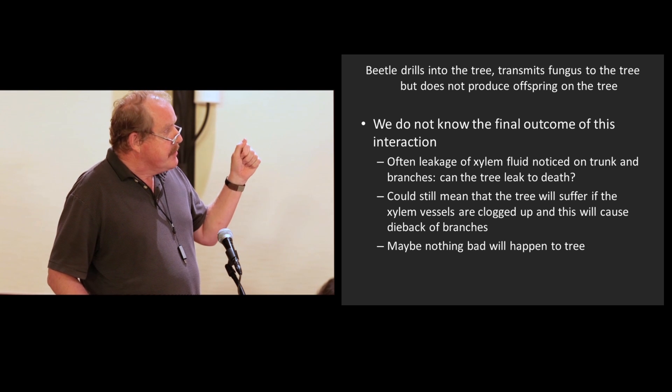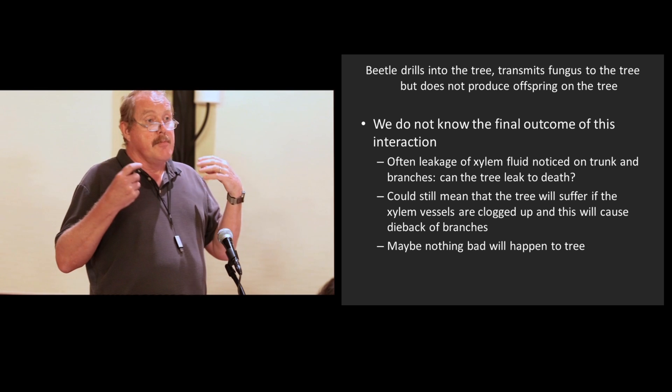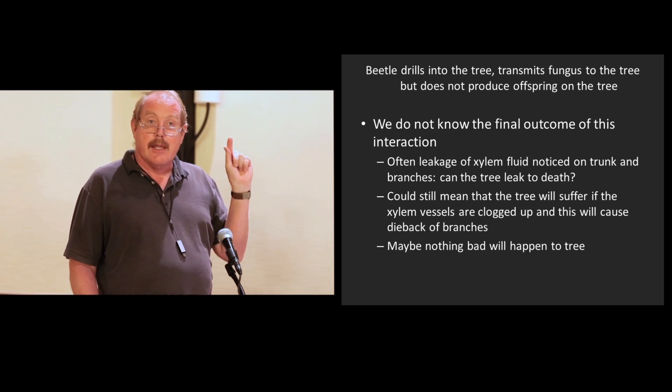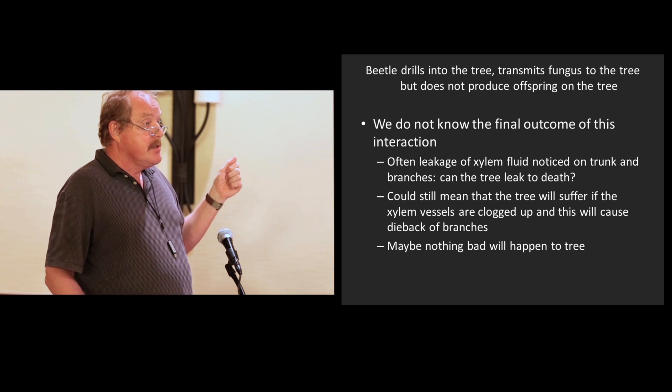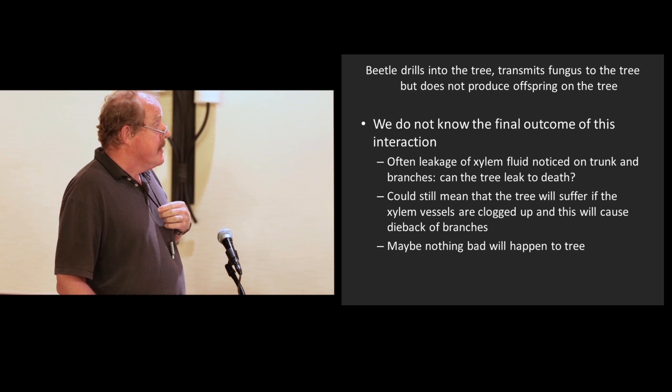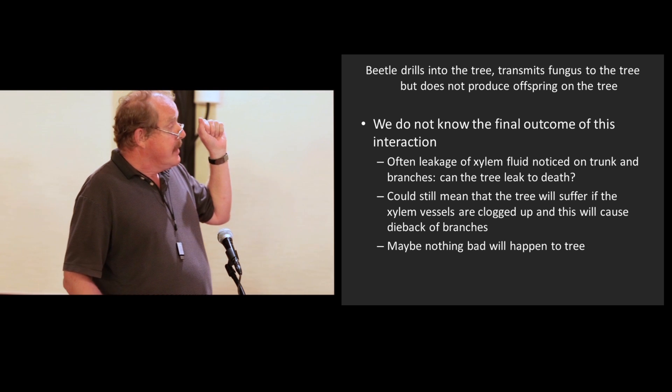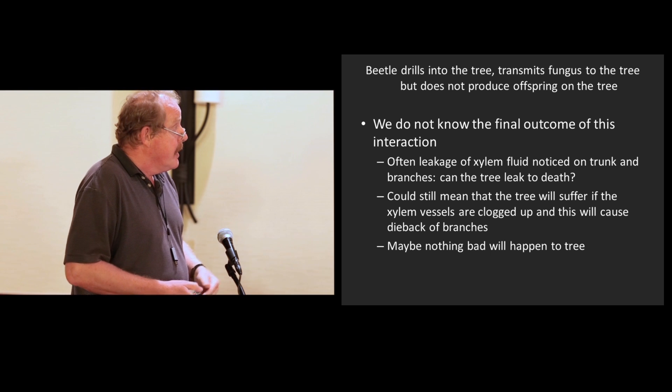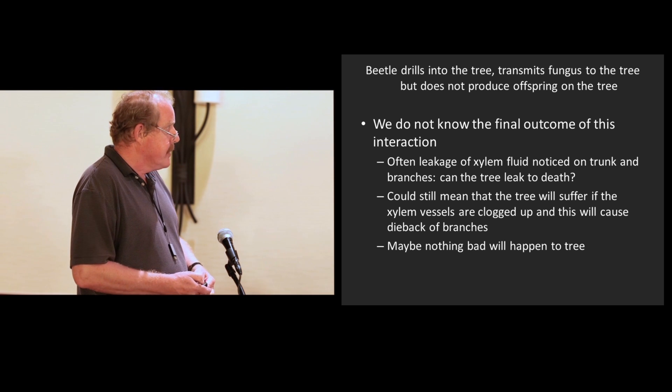In case that the beetle drills into the tree, transmits the fungus to the tree, but does not produce offspring on the tree. In those cases, where we have a fungus in the tree, but the beetle doesn't reproduce, we don't know what happens. What we do see, in many cases, is that you get wet spots on the bark. And the beetle has drilled into the xylem, and the xylem flows out of the tree. So, one of the questions we don't know yet, is can these trees get so leaky that no more water goes from the roots to the top of the tree, and the tree still dies? What you often see in these cases, too, is that there's dieback of branches. So, certain branches on top of the tree die. And in other cases, maybe nothing will happen to these trees. We don't know much about this thing yet, because we've just been working on it for about four or five months.